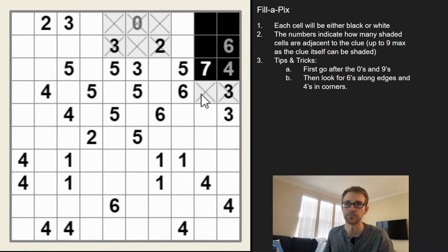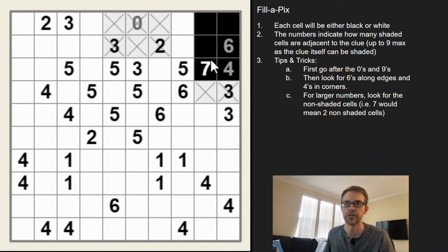can X those out. When we're dealing with large numbers like this seven, we don't have to figure out where all the shaded cells are. If we can find where the unshaded cells are, that might be easier. So if you take nine minus the clue here, seven, we only need to find two unshaded cells, which we already did. So we know that this seven is solved now because there's no more unshaded cells, so all